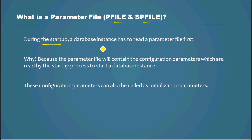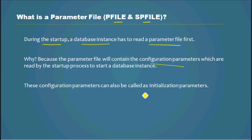During the startup of an instance, a database instance has to read a parameter file first so that it can set up the environment. The parameter file contains the configuration parameters which are read by the startup process to start the database instance. The configuration parameters can also be called initialization parameters. Like most software, when they start they need to set up the environment, and to do that they need to read some parameter file.